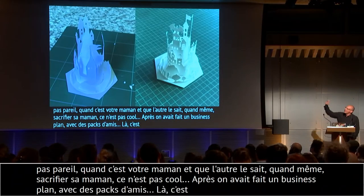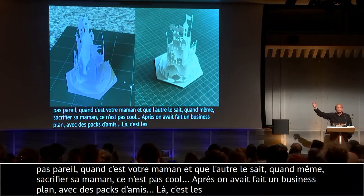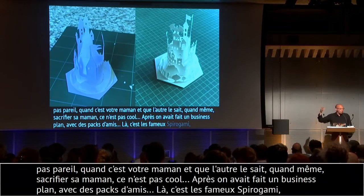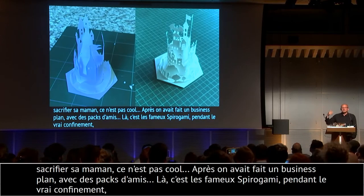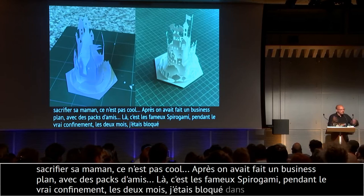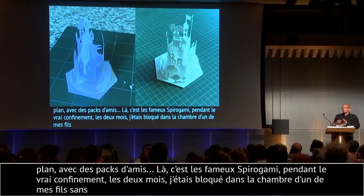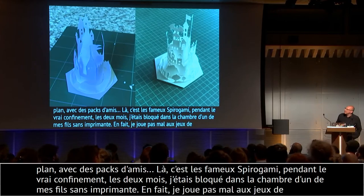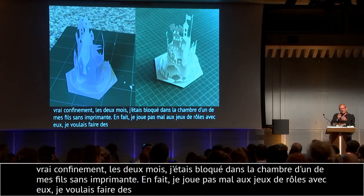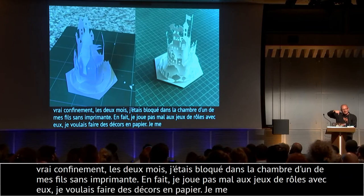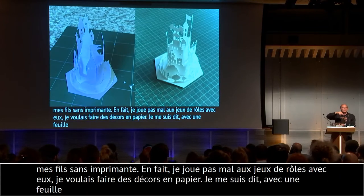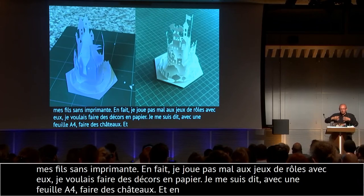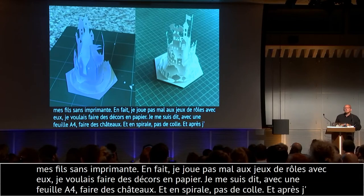L'idée c'était pendant le vrai confinement — les deux mois où on était bloqués. Je me suis retrouvé dans la chambre de mon fils sans imprimante. Je joue pas mal aux jeux de rôle avec eux, je me suis dit : je vais faire des décors avec du papier. J'ai fait ça — ça serait marrant, juste avec une feuille A4, je vais faire des châteaux. L'idée : je vais l'enrouler en spirale, pas de colle, parce que la spirale quand vous l'enroulez essaie de reprendre sa forme, elle bloque le papier. J'ai pris un cutter et du meilleur papier.